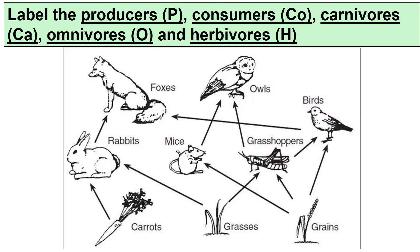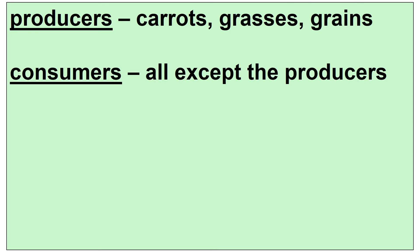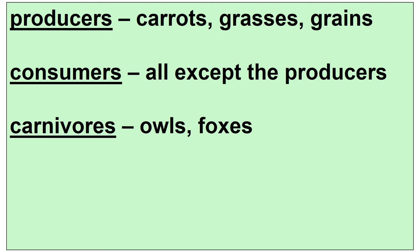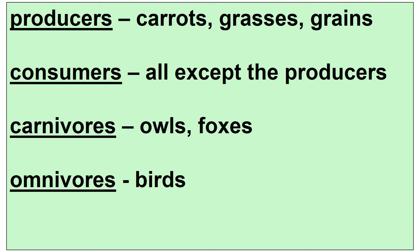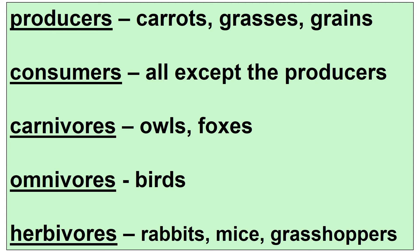In your food web, I want you to label them. Beside the producers put a P, consumers CO, and so on — pause and do that. Here's what you should have: producers are the carrots, the grasses, and the grains. Consumers should be everything — everything should have CO beside it except the producers. Carnivores are owls and foxes. Omnivores are the birds — the only ones. And herbivores are rabbits, mice, and grasshoppers.